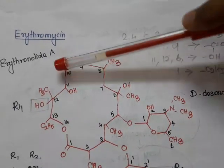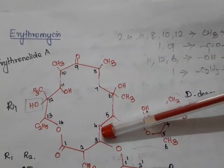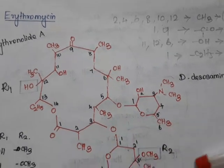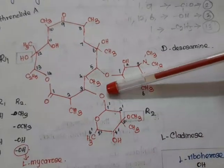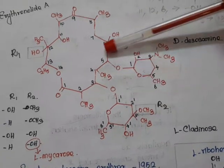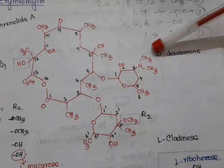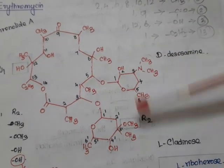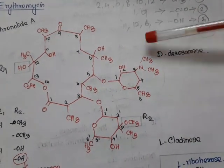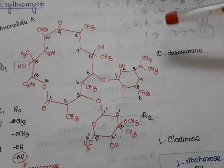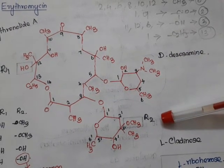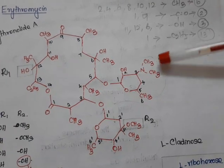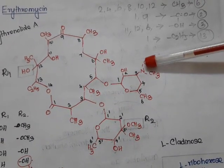That is the structure of the lactone ring. At the 3rd position it is linked with a sugar called L-cladinose by means of a glycosidic linkage. At the 5th position it is also linked with another sugar called D-desosamine by means of a glycosidic linkage. Cladinose is a neutral sugar whereas desosamine is an amino sugar because of the presence of a dimethyl amino group.